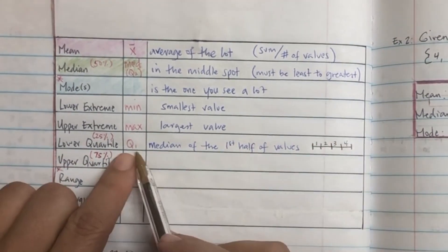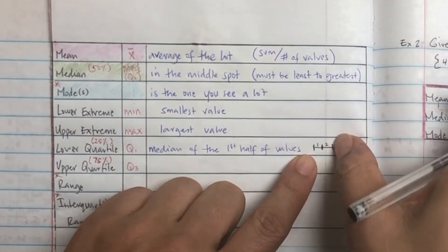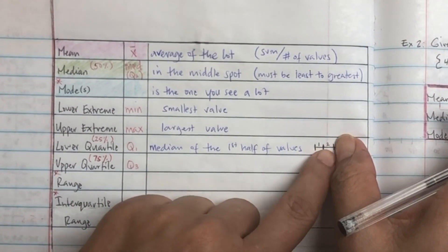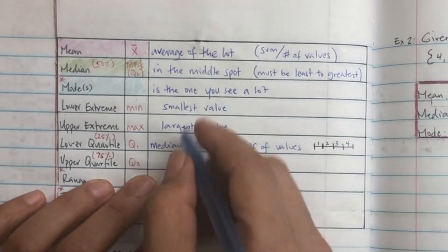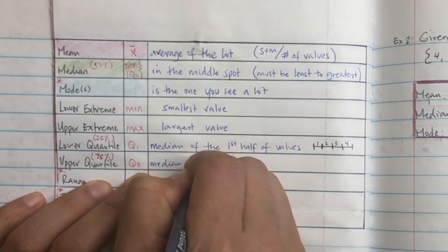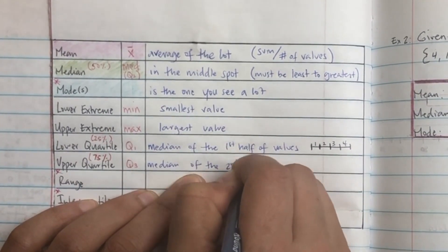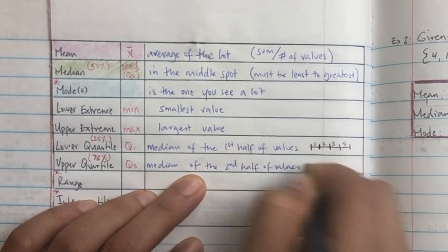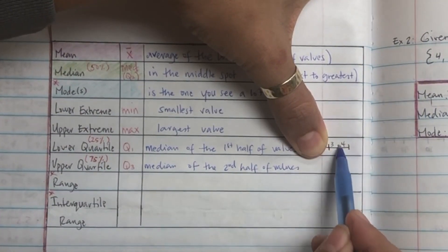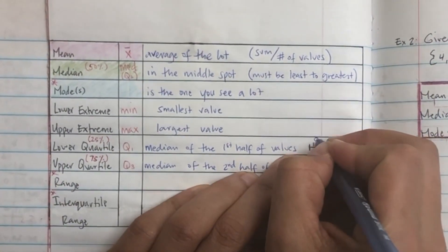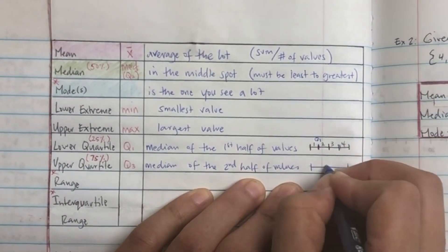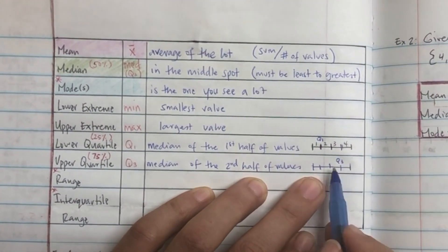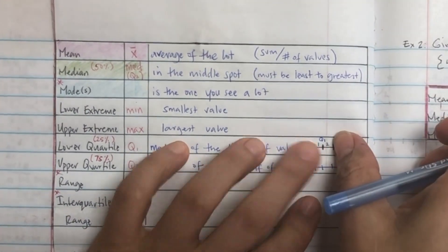Lower quartile is the median of the first half, the first quarter. Then the upper quartile will be the top, the 75%. So again, if you had that line, take half of the line. That'll be the middle, then the two middles of that would be Q1 and Q3.